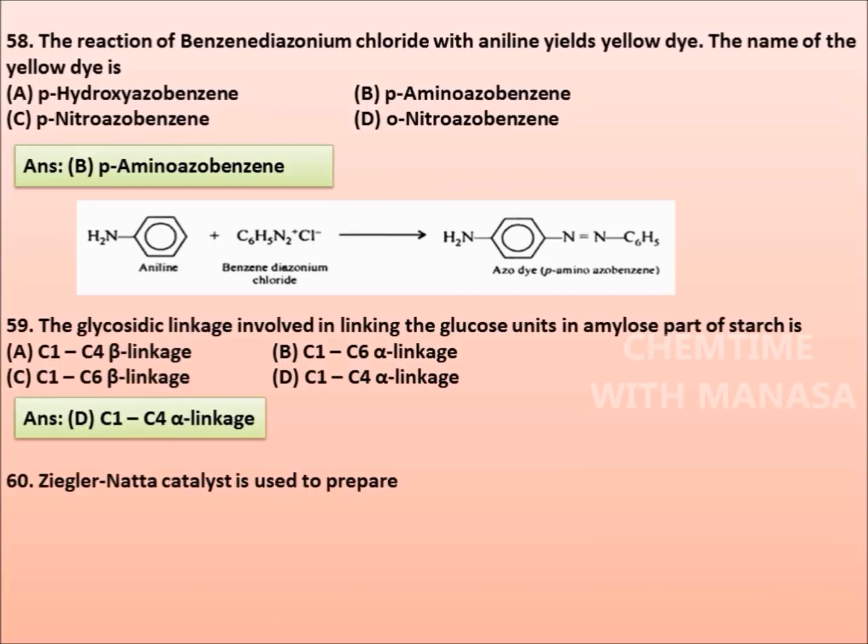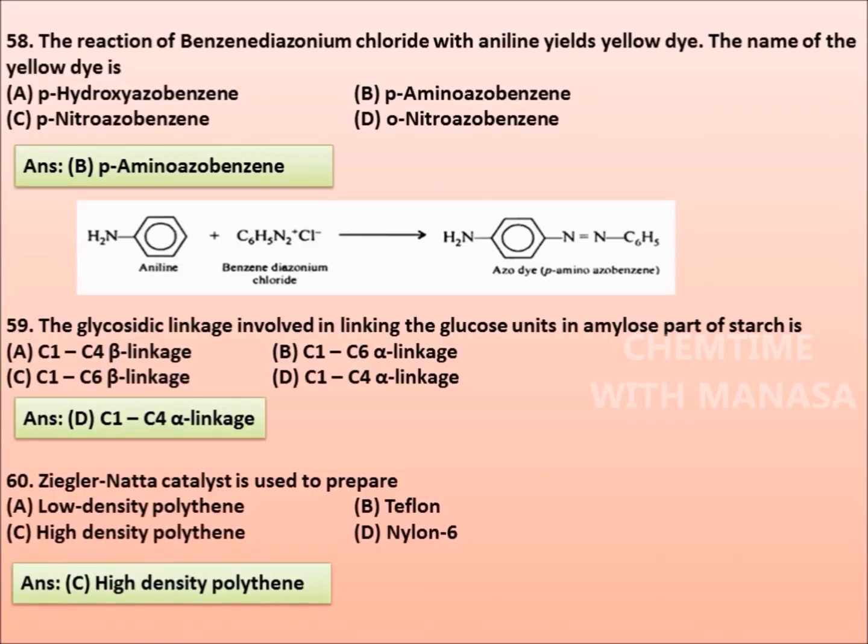Question 60: Ziegler-Natta catalyst is used to prepare low density polythene, teflon, high density polythene, or nylon 6. Correct answer is high density polythene. Option C is correct answer.